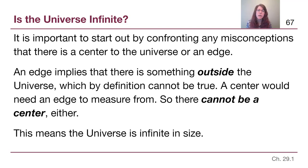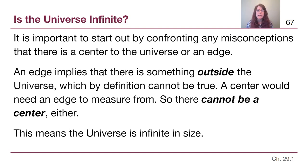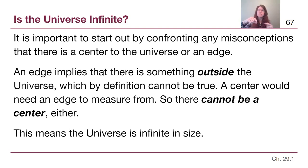The second question is: is the universe infinite? There are a lot of misconceptions people have about this, partly because we have no way to imagine the scale, and partly because it's easy to imagine some small point that expanded outwards — but we're going to come away understanding that that does not describe the real universe. If we had a center and an edge, the universe would be finite in size. An edge implies there's something outside the universe, which by definition isn't possible. And a center would need an edge to be measured from — the center of a circle is equidistant from all points on the edge, but if we have no edge, there's no way to have a center.